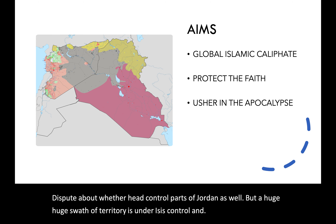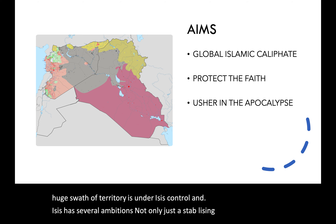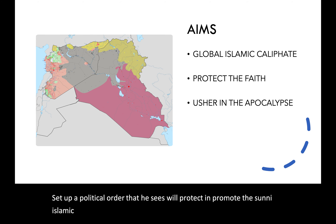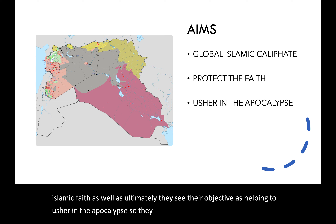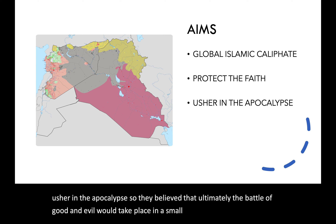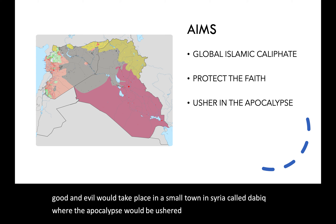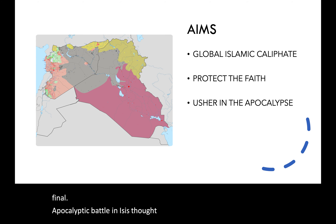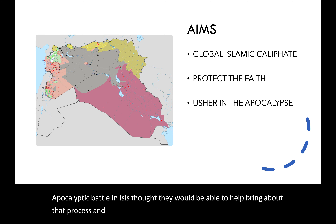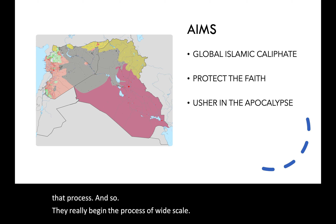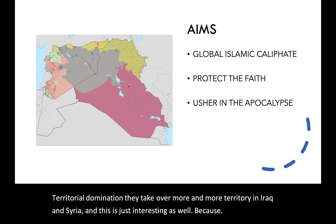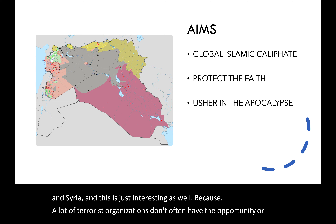ISIS had several ambitions beyond establishing the Islamic caliphate: it wanted to set up a political order that would protect and promote the Sunni Islamic faith, and ultimately it saw its objective as helping to usher in the apocalypse. ISIS believed the battle of good and evil would take place in a small town in Syria called Dabiq, where the apocalypse would be ushered in — the faithful transported to heaven and the infidels sent to hell in a final apocalyptic battle. Most terrorist organizations don't have the opportunity or capacity to take over large swaths of territory, making ISIS particularly notable.